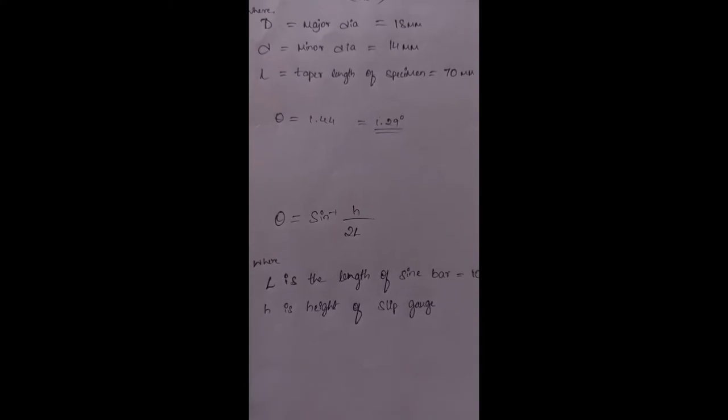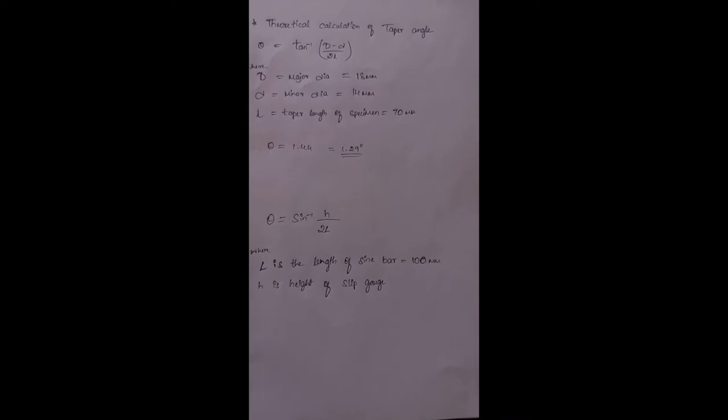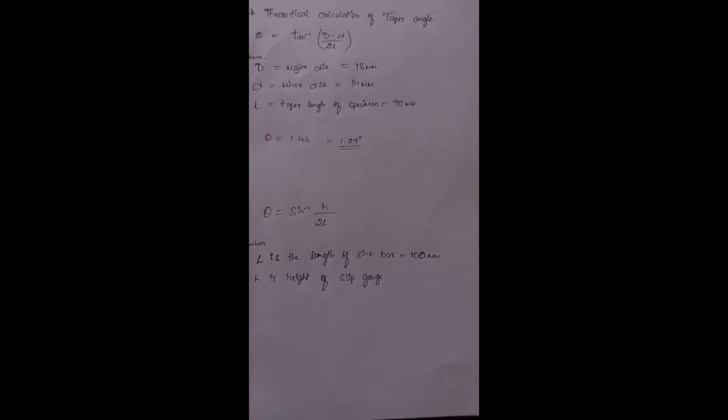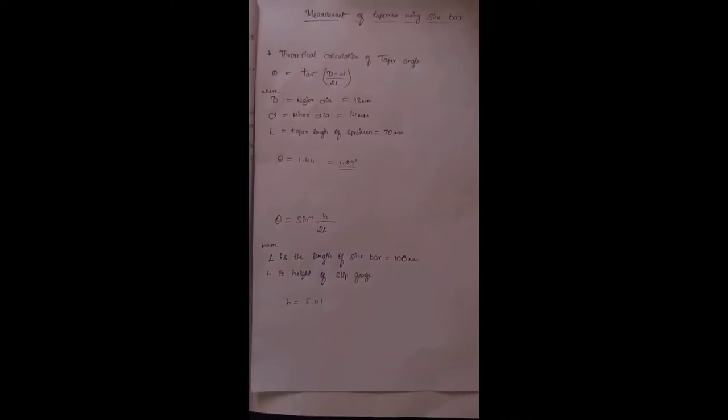To find the height of the slip gauges, we have the formula theta equals sine inverse of h by 2L, where L is the length of the sine bar which is 100 mm, and h is the height of the slip gauges.